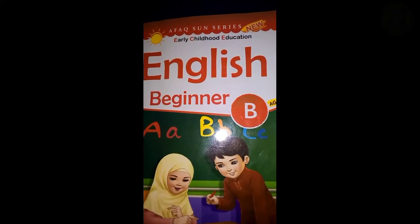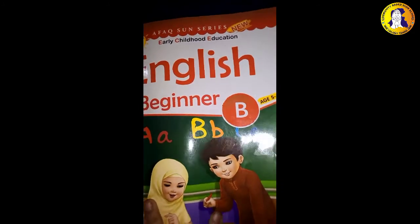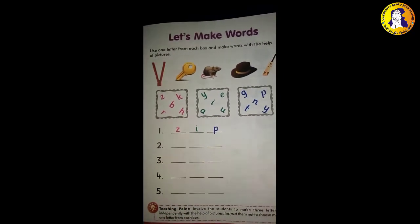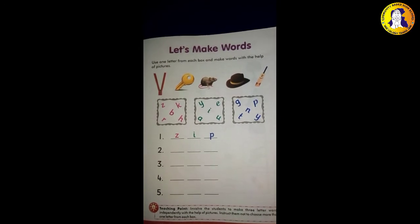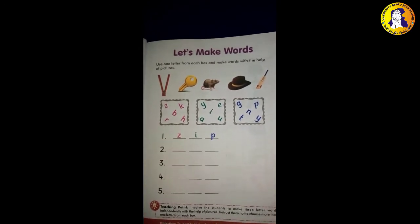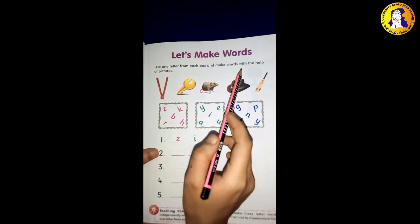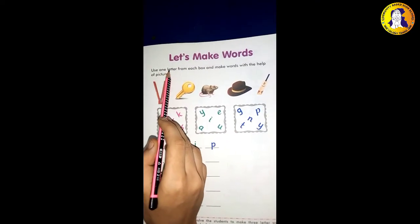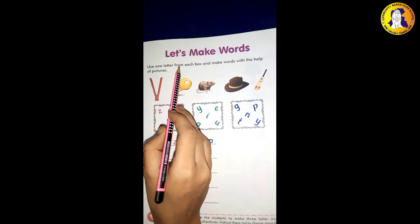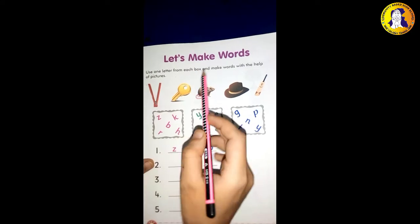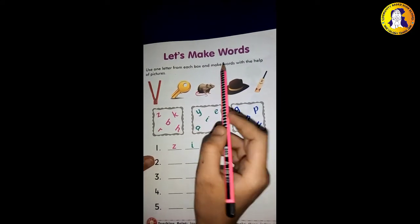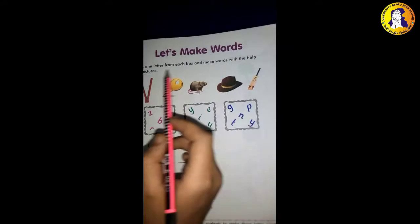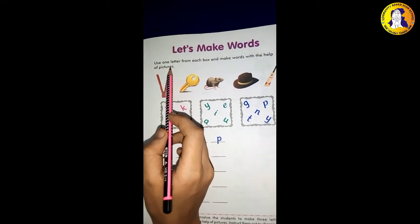Assalamu alaikum students, class ECD2. Today we introduce subject English. Today we learn about writing the naming words. Today we make three letter words with help of pictures. Use one letter from each box and make words with the help of pictures. Use any one letter from each box and make words with the help of pictures.